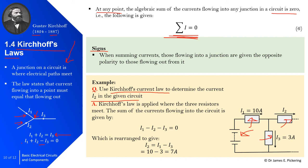As an example, using Kirchhoff's current law to find I2: in the circuit I1 is positive (flowing in) and I2 and I3 are negative (flowing out). With I1 = 10 A and I3 = 3 A, rearranging gives I2 = I1 − I3 = 10 − 3 = 7 amps. This makes sense: 10 amps flows into the junction, 3 amps flows out via I3, so 7 amps must flow out via I2.